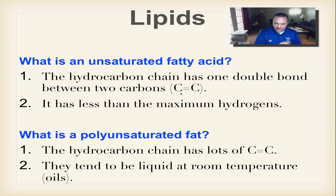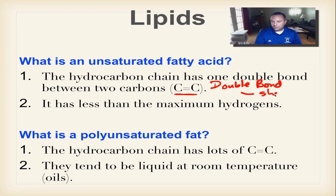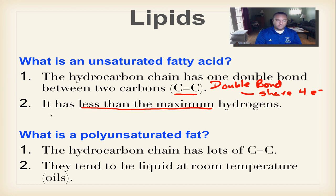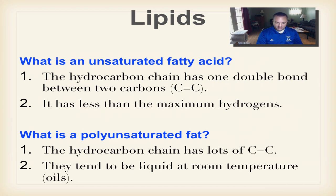Unsaturated fatty acids have at least one double bond in the chain. A double bond shares four electrons — two pairs — and because of that double bond, there's no extra hydrogen at those carbons, giving you less than the maximum number of hydrogens. If you have more than one double bond you are polyunsaturated — 'poly' meaning many. Polyunsaturated fats tend to be liquids at room temperature, like vegetable oil, canola oil, or peanut oil.